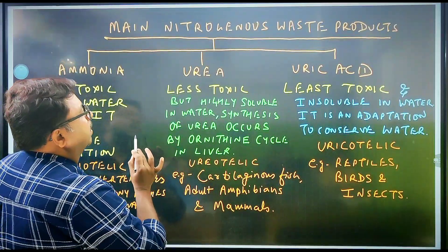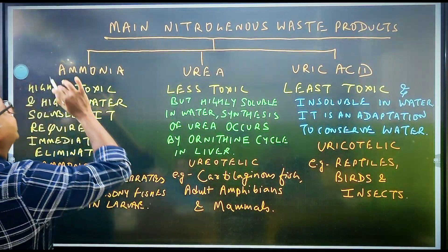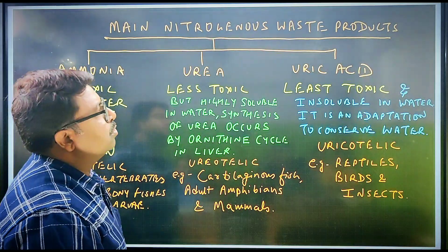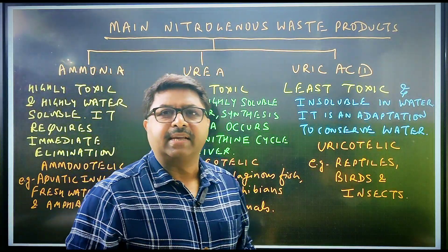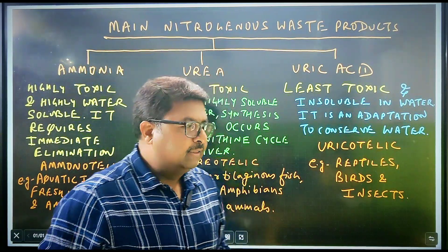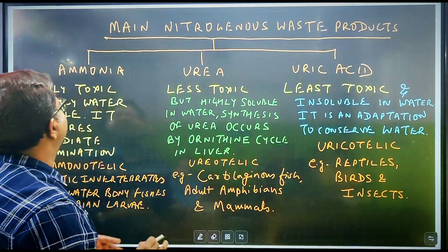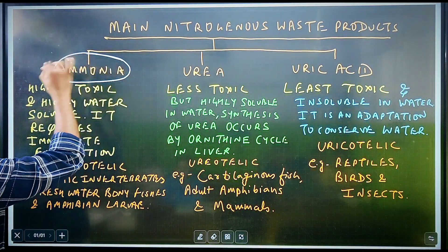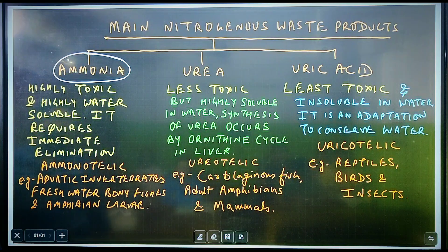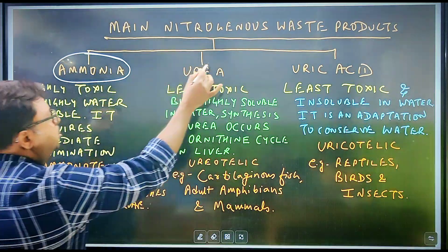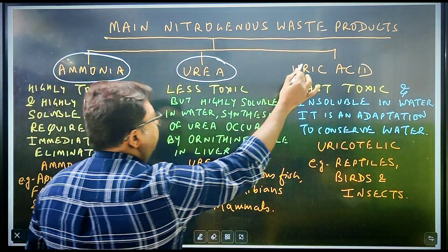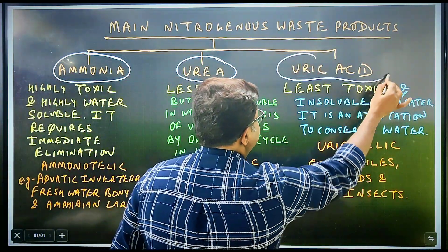In human excretion we will mainly study about the kidney, which helps in the formation of urine. Now what are the main nitrogenous wastes? The main nitrogenous waste products are: number one is ammonia, number two is urea, and number three is uric acid.